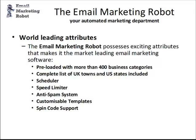The scheduler also helps you manage incoming enquiries — if you're putting your phone number in the email, it's a good idea to send when people can ring. It's got a speed limiter to mimic human behaviour; you can set it to send up to 90 emails per hour, so you're not bombarded with too many enquiries and can handle them effectively. It has the anti-spam system mentioned, customisable templates, and spin tag support to make every email different.